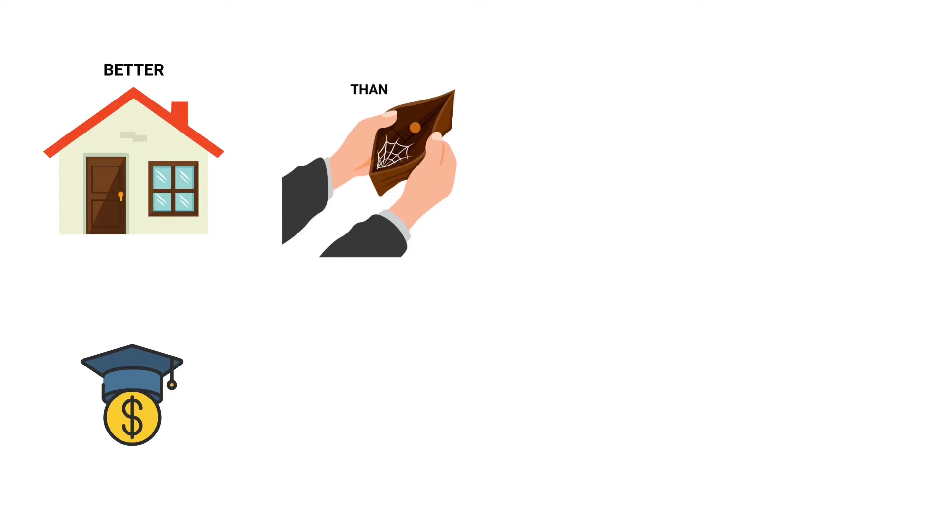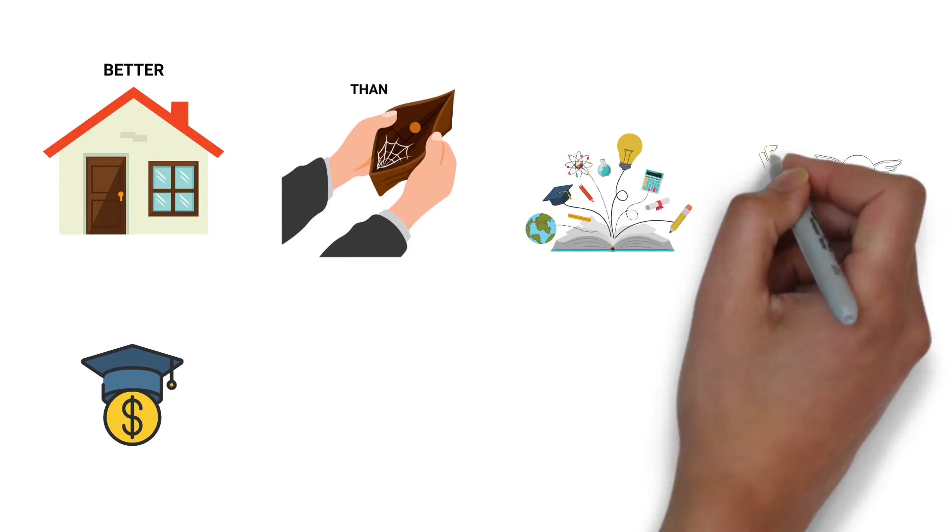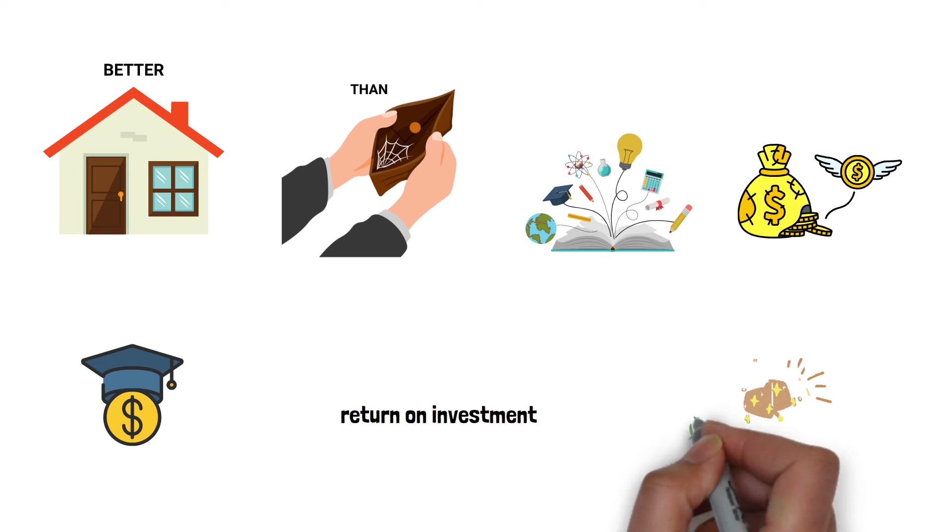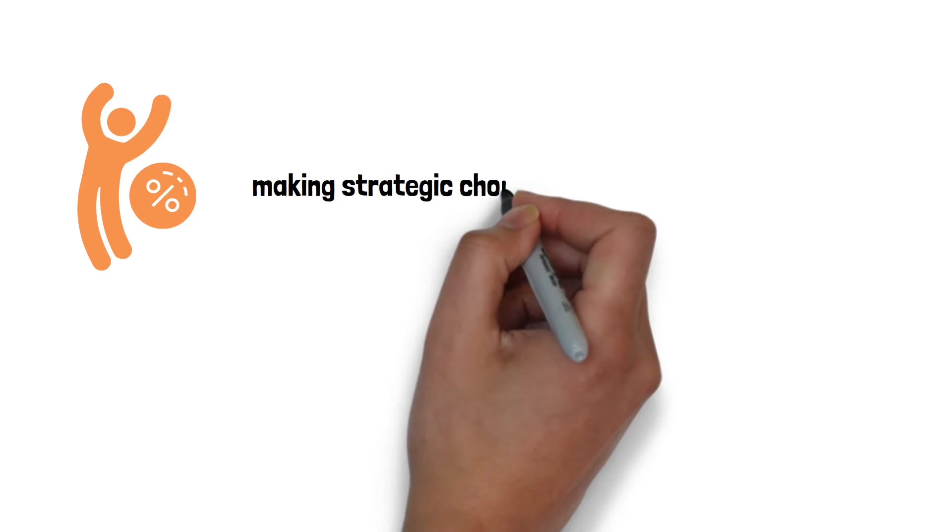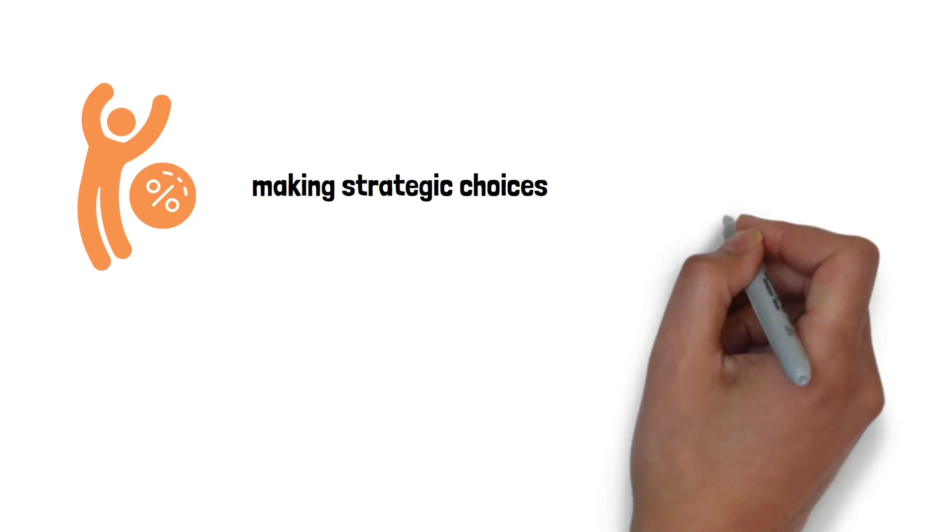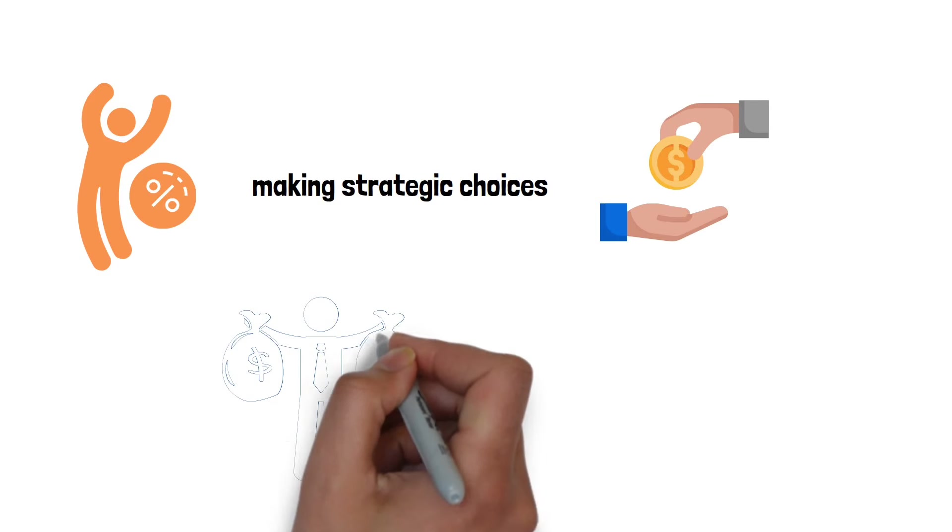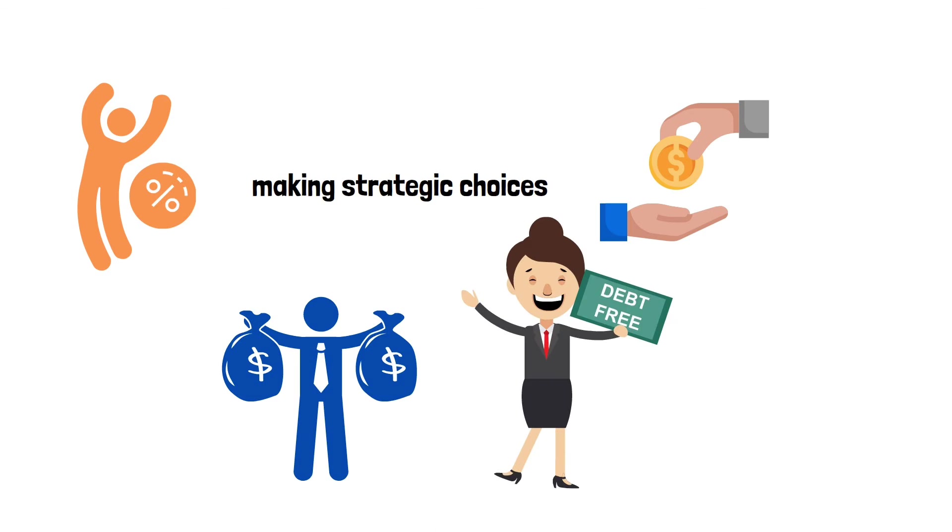Student loans are another area to be cautious about. While education is important, massive student loan debt can cripple your finances for years. The book suggests considering the return on investment when choosing an education path. So debt avoidance is not just about not taking on debt. It's about making strategic choices so that when you do need to borrow, it's manageable and for things that will help improve your financial situation in the long run.